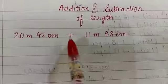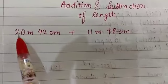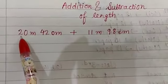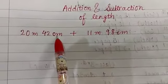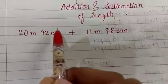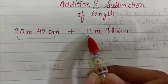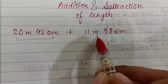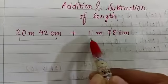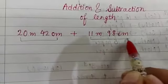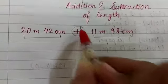We will try one question here. We have two lengths. The first length is 20 meters and 42 centimeters. The second length is 11 meters and 98 centimeters. What do we do? We add them.